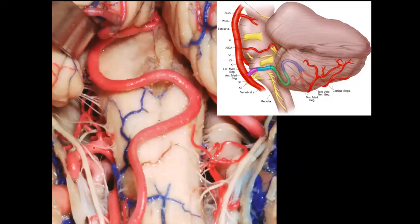The PICA then starts to come inferiorly — this is a very classic course. It forms a loop commonly known as the caudal loop of the PICA. In cerebrovascular surgery, if you're doing a bypass, it's a common bypass site because it's very superficial, making it easy to access for posterior revascularization.